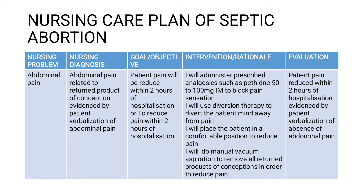The other problem that we can see in septic abortion is abdominal pain. In terms of the diagnosis, we can say abdominal pain related to presence of retained product of conception. But in this case, the relation can also be related to inflamed uterine wall, evidenced by patient's verbalization of abdominal pain. In terms of the goal or objective, you can say patient's pain will reduce within two hours of hospitalization.